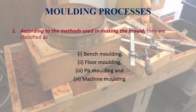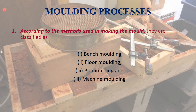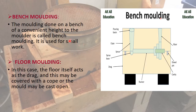The first classification is according to the methods used in making the mold. There are different types of methods to make a mold. The most commonly used ones are bench molding and floor molding, next is pit molding, and the last one is machine molding. These are the most commonly used methods to make any kind of mold of any particular size.